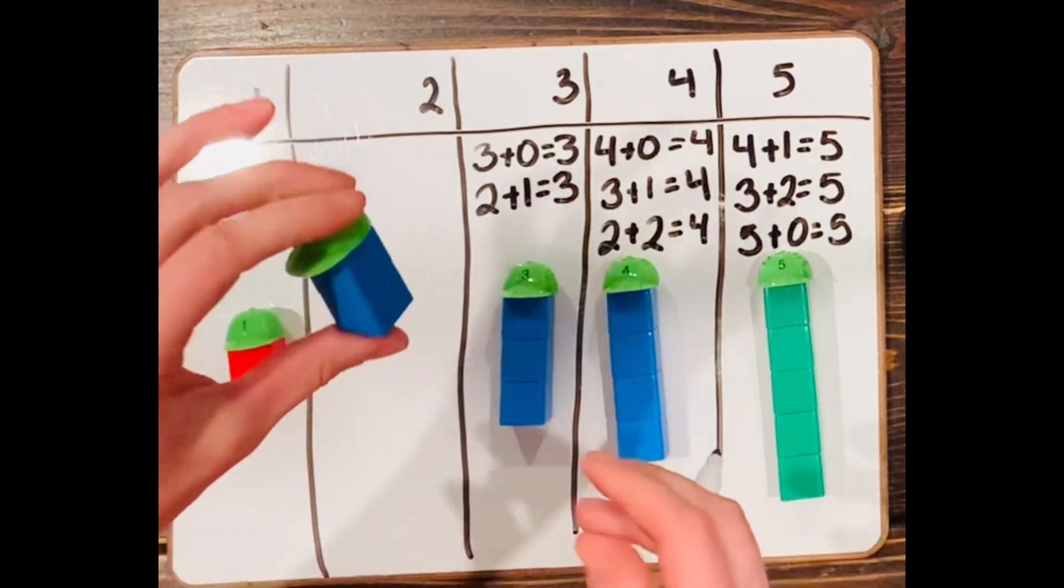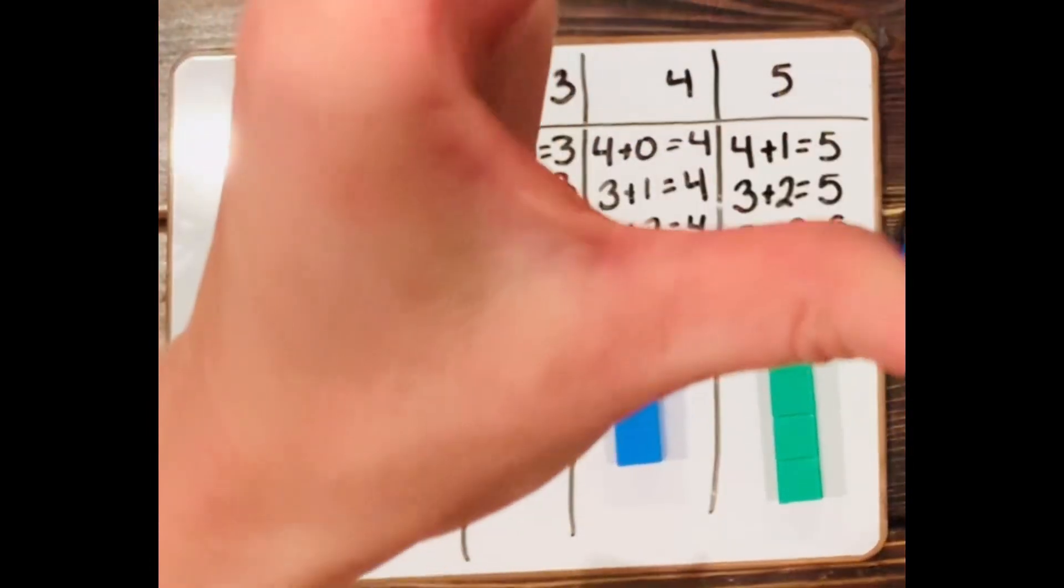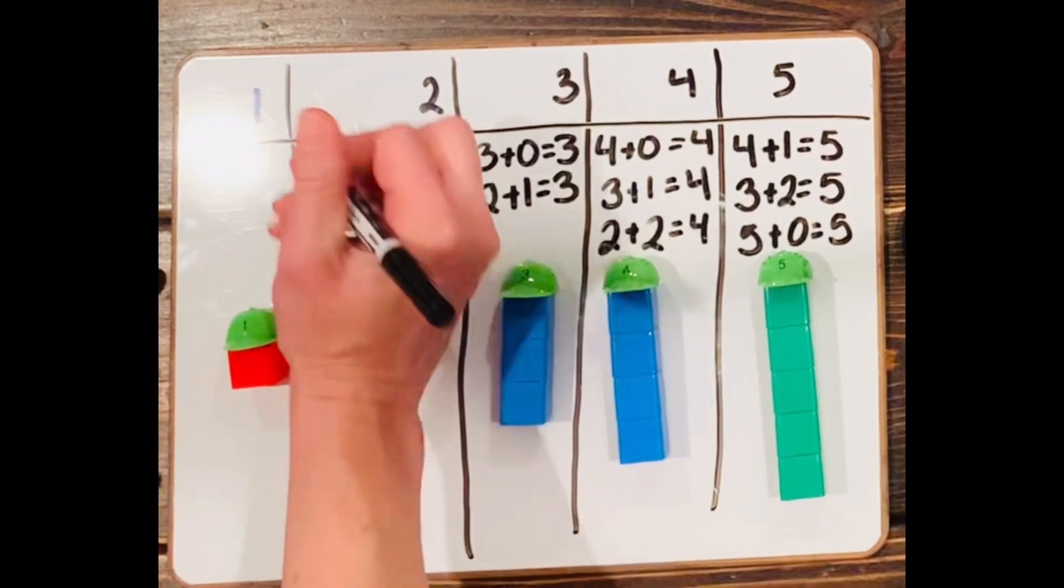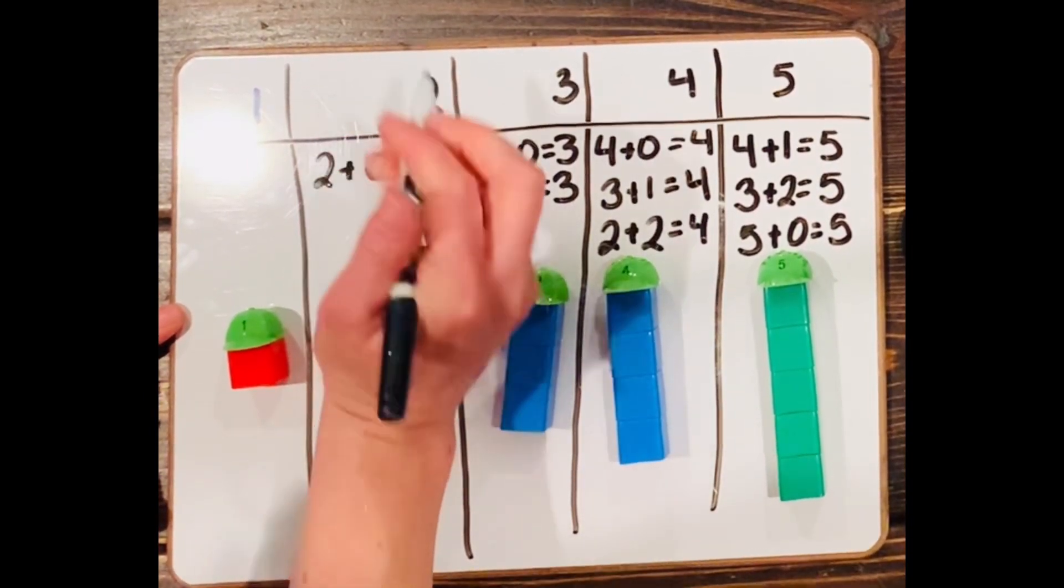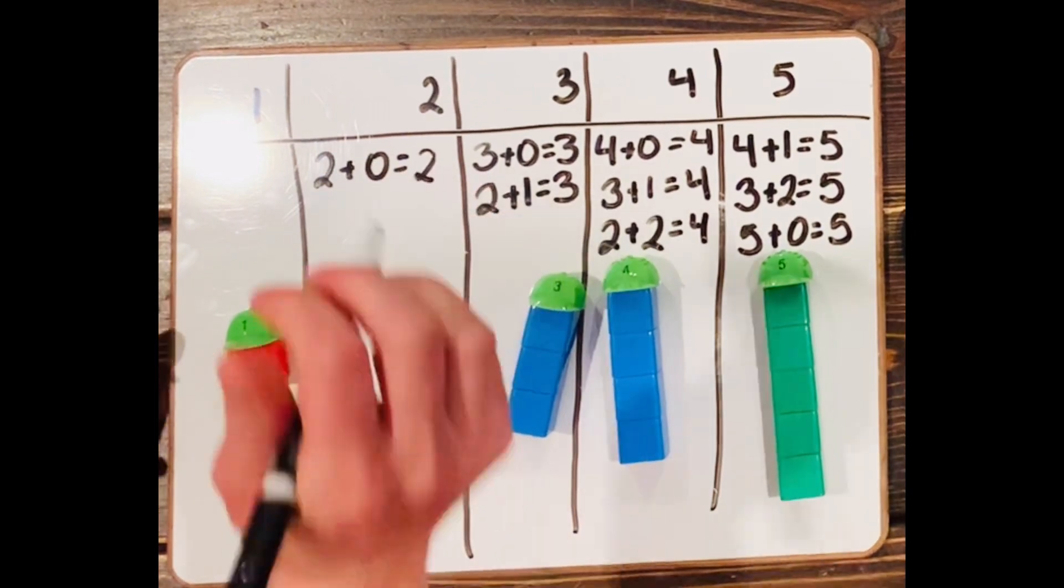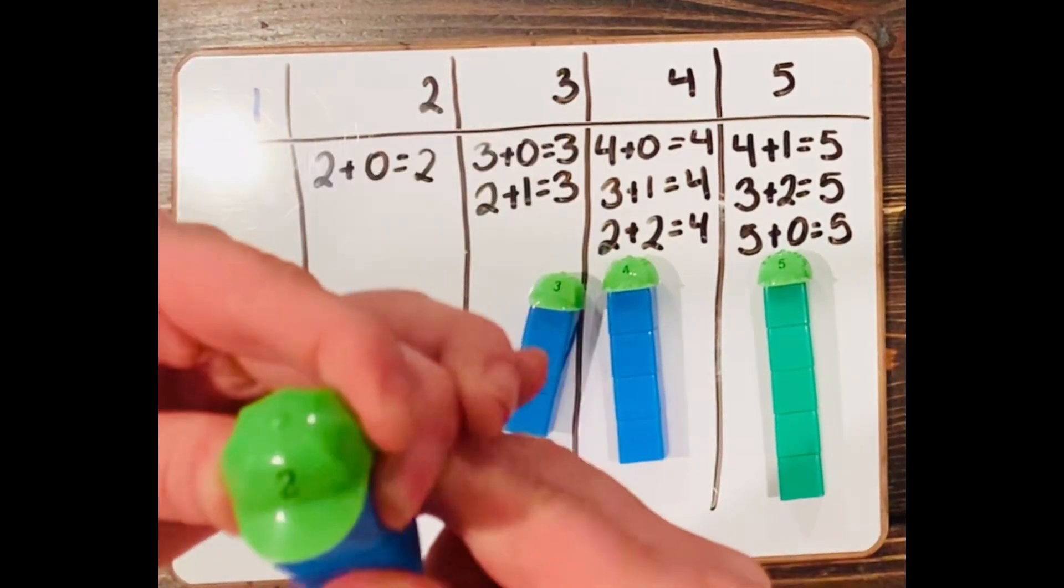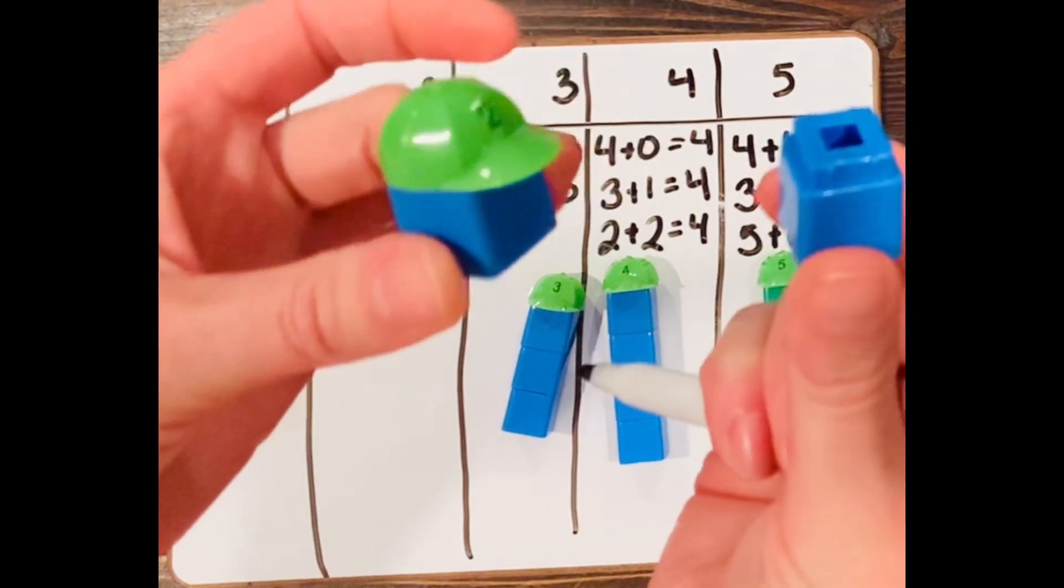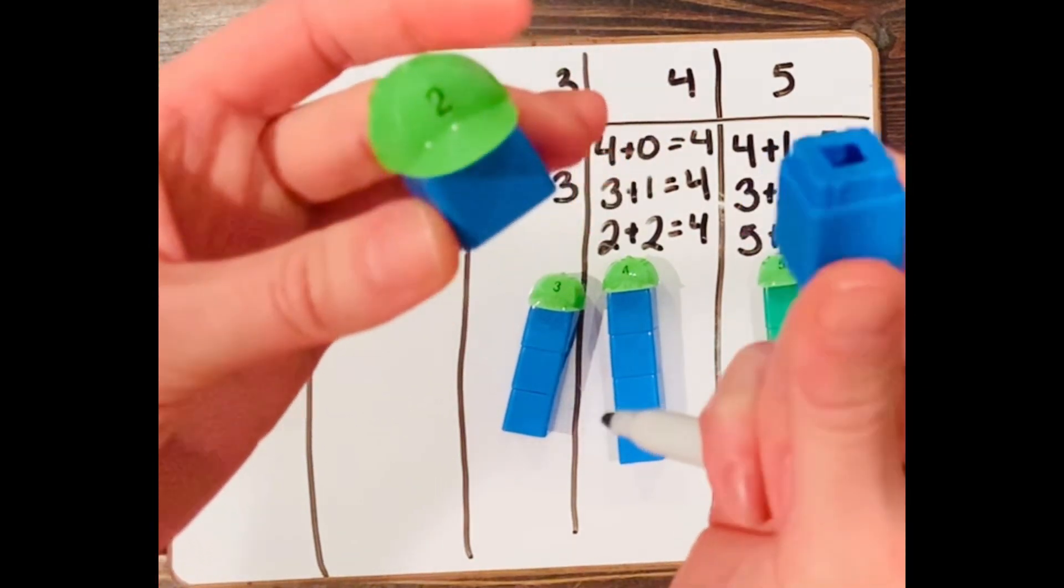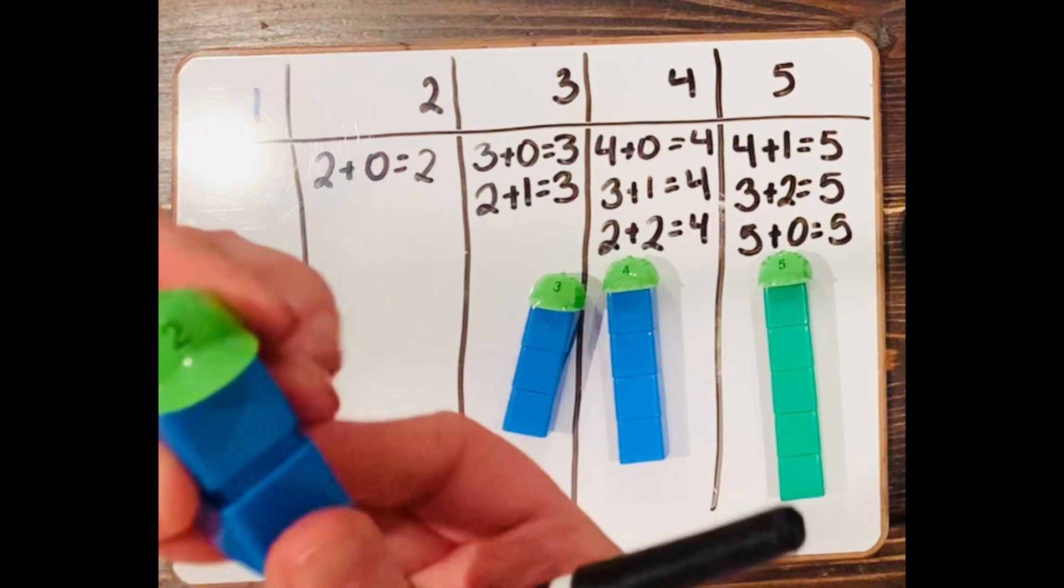Okay, let's move on to two. So two and zero equals two. What if I break off one? What number do I have here? One and one. One and one equals two.